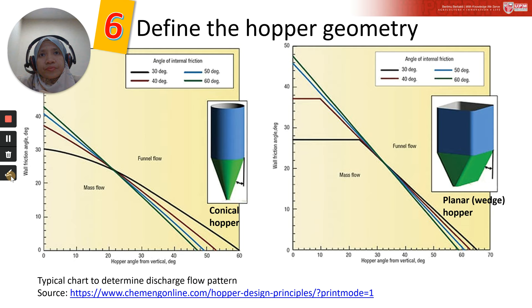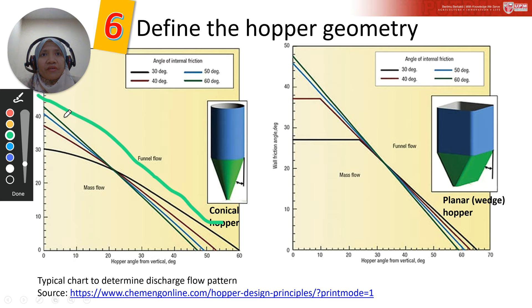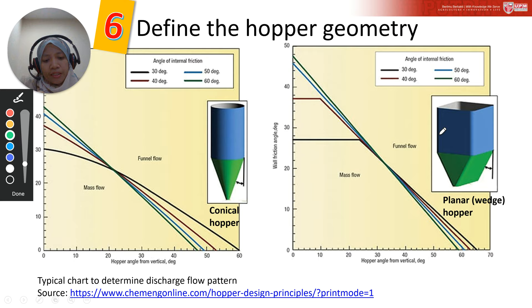This region here is the region of mass flow, and the other part beyond the top line is basically the region of funnel flow. This chart shows the limit of mass flow — this one is for a conical hopper, while this one is for a planar hopper, also known as a wedge hopper.